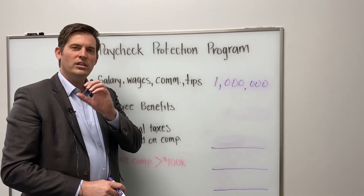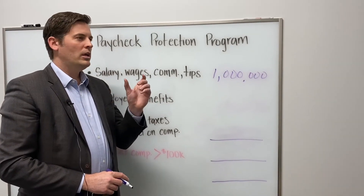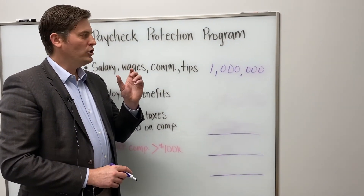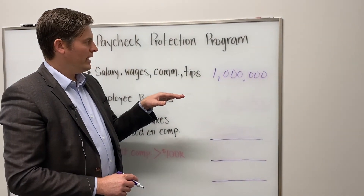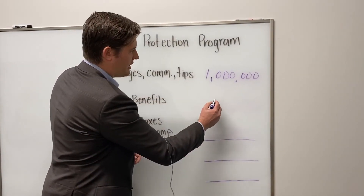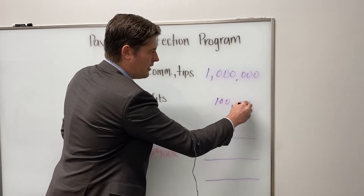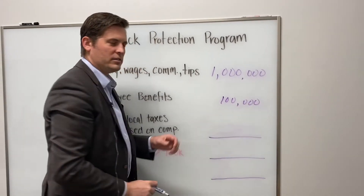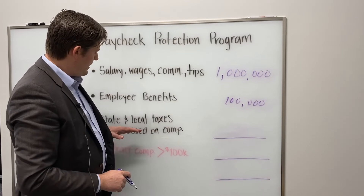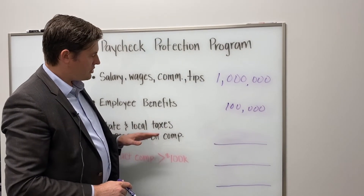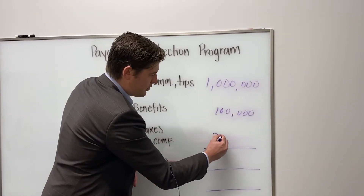Employee benefits are listed on the information sheet on the US Treasury website, which specifies which employment benefits you can use in your calculation. Let's say those total $100,000. Next is state and local taxes assessed on compensation — for this, let's use a number of $200,000.